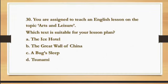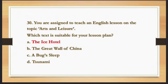Number 30. You are excited to teach an English lesson on the topic Arts and Leisure. Which text is suitable for your lesson plan? The correct answer is A Frog's Cycle — referring back to the science context, with the appropriate text selected for the given topic.